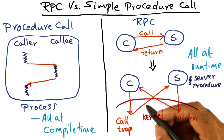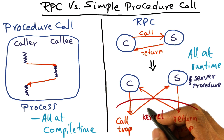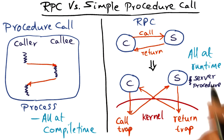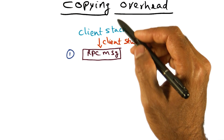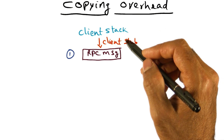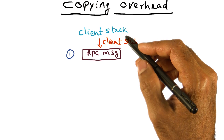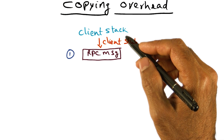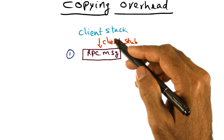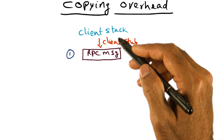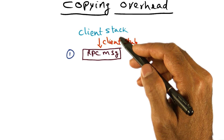Let's analyze how many times copying happens in the RPC system. Recall that in an RPC system, the kernel has no idea of the syntax and semantics of the arguments that are passed between the client and the server. Yet the kernel has to be the intermediary in arranging this rendezvous between the client and the server.